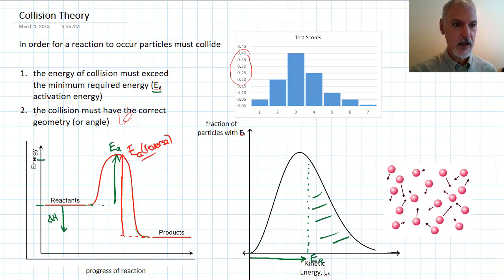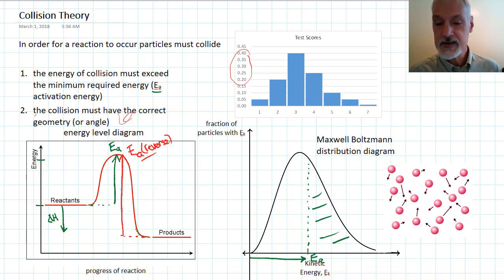So, just to recap, we can get activation energy from our energy level diagram, which we saw in the previous unit. And we can also see activation energy by studying a Maxwell-Boltzmann distribution graph. So, remember these points as we go forward and look at factors that affect the rate of a reaction.